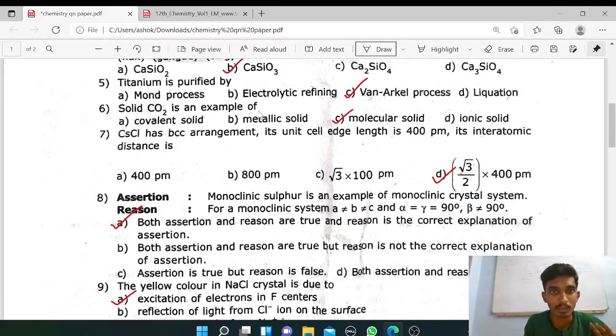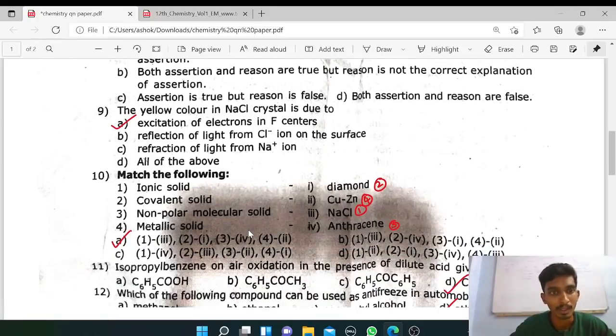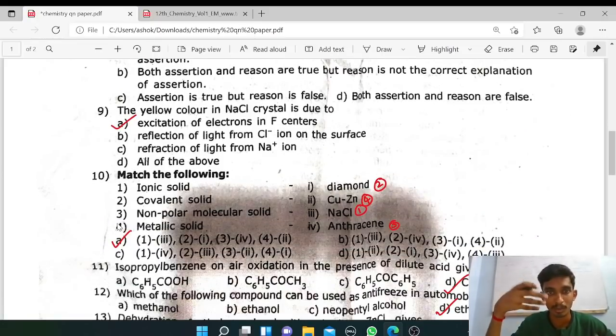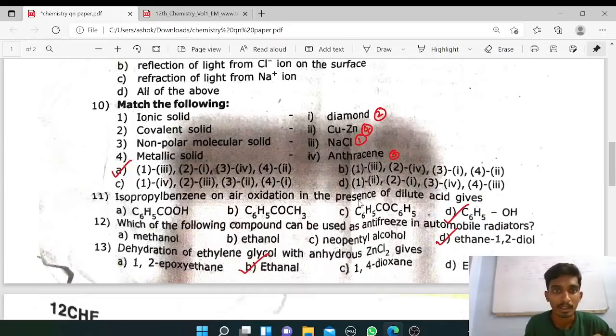Fourth question, calcium silicate smelting process. Next, titanium is purified by Van Arkel process, it is book back question but very easy, so fifth question book back. Next solid state, solid CO2 is an example of molecular solid. Next question book back option D, root 3 by 2 into 400 picometer. Eighth question book back, option A. Ninth question, the yellow color of NaCl is due to the excitation of electrons in F-center, this is book back.